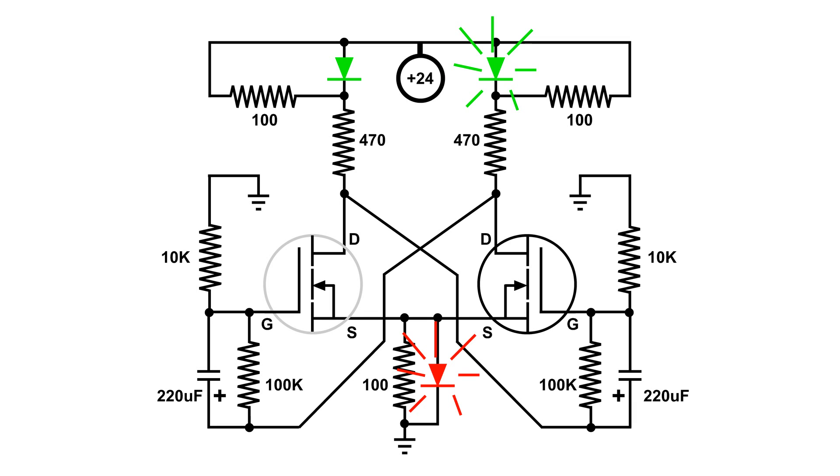The right LED is lit. And the pulse that turned on, the positive pulse that turned on the right MOSFET came from here, went up through that 100k ohm resistor to the gate, turning on the right MOSFET.